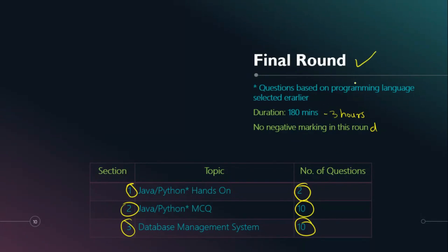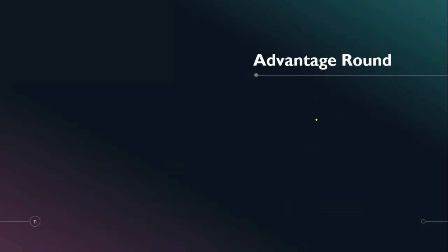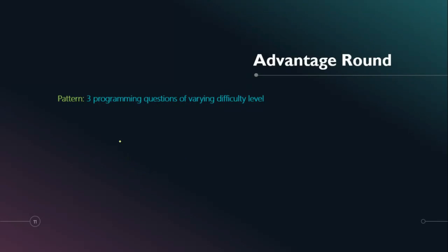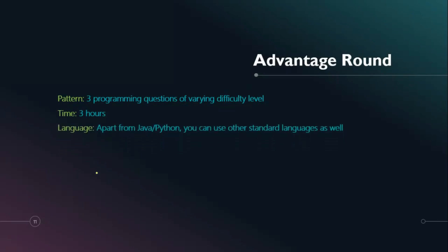Clearing the Final Round makes you an Infosys Certified Software Programmer. If you scored 65% and above, you get the chance to attend the Advantage Round. This round has three programming questions of varying difficulty — one basic, one medium, one hard — and the time limit is also 180 minutes, giving you roughly one hour per question.